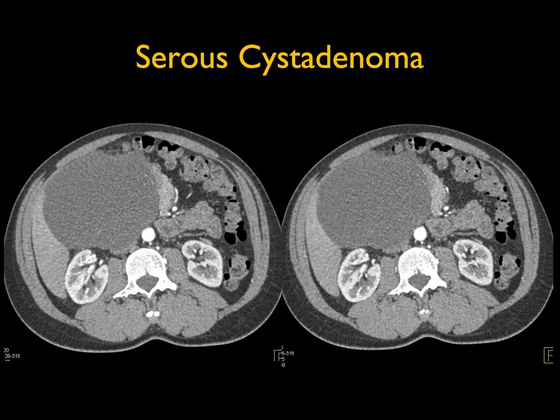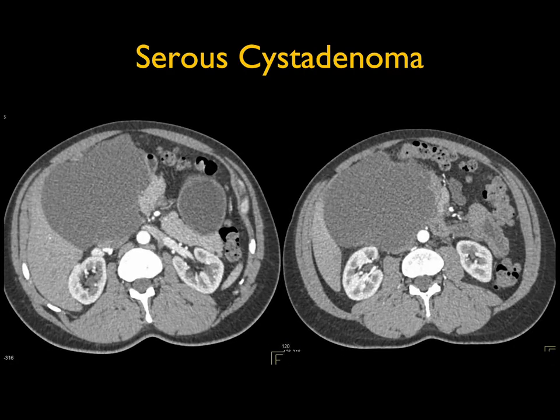In case number eight, there's a large cystic mass in the head of the pancreas. It's well defined — I don't see calcification, I don't see septations. I have to think first of a serous cystadenoma. I could not exclude a pseudocyst from pancreatitis without a history. A mucinous cystic neoplasm is considered, but they often have septations and are more commonly in the body and tail of the pancreas rather than the head.